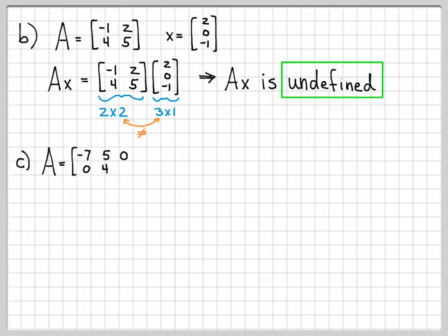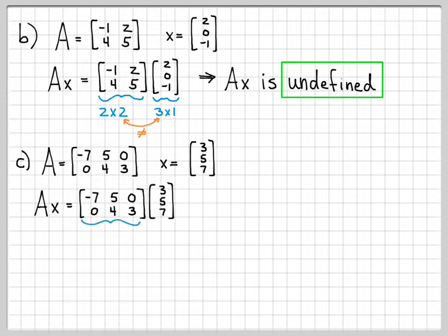Let's look at one final example. Here, the matrix A is negative 7, 5, 0, 0, 4, 3. X is still a length 3 vector, 3, 5, 7. We're going to compute A times X. I write down A, I write down X, and I check the dimensions first of all. In this case, A has two rows and three columns, and X has three rows and one column. If I look at the inner dimensions there, they match, so we know that we can compute this quantity.